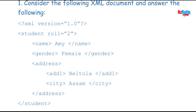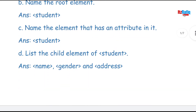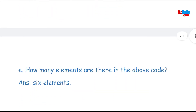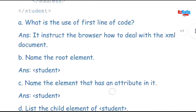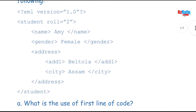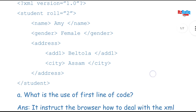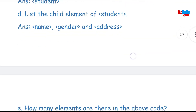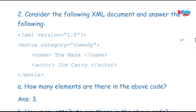The next question: how many elements are there in the above code? We count only the opening tags, not the closing ones. So: student, name, gender, address, add1, and city — there are six elements total. The answer is: there are six elements in the above code.